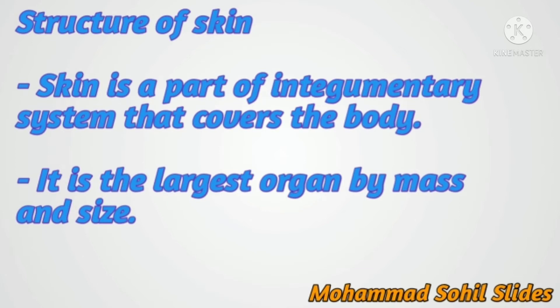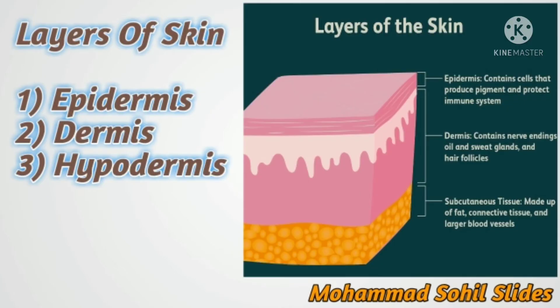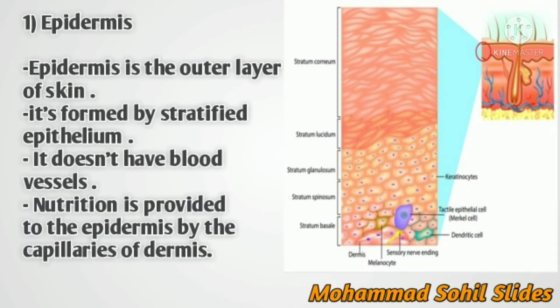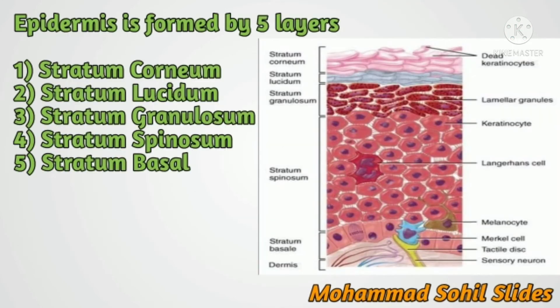Now coming to the layers of the skin. Skin is made up of 3 layers: epidermis, dermis, and hypodermis. First, epidermis. Epidermis is the outer layer of skin, formed by stratified epithelium. It doesn't have blood vessels. Nutrition is provided to the epidermis by the capillaries of the dermis. Epidermis is formed by 5 layers.